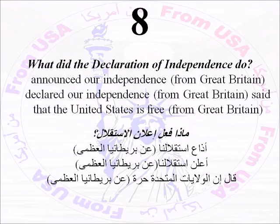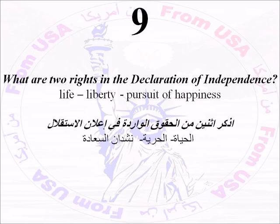Number Eight: What did the Declaration of Independence do? It announced our independence from Great Britain, or you can say it declared our independence from Great Britain, or it said that the United States is free from Great Britain. Number Nine: What are two rights in the Declaration of Independence? The right to life, liberty, and the pursuit of happiness.